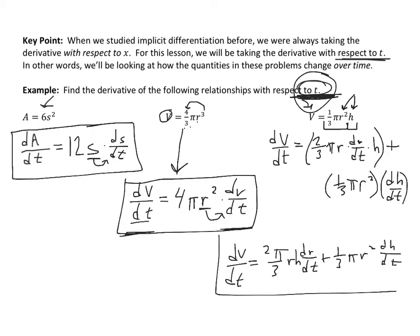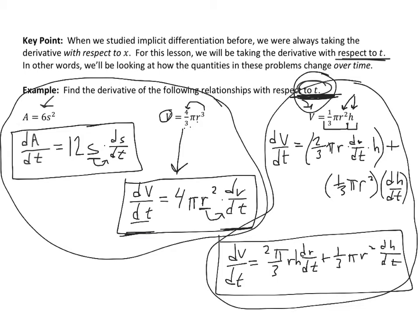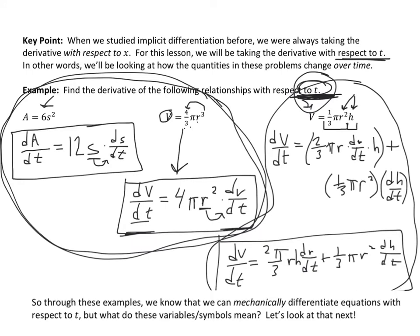The relationship between these rates is more complicated, but this is something we can do. The work we'll be doing today will be much more like these. As we get further in, this lesson is going to take a few days and will involve several different rates. Now, through these examples we know we can mechanically differentiate equations with respect to t — but there should be a question of what do these variables and symbols actually mean? That's precisely what we're going to look at next.